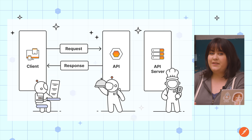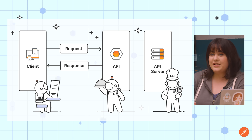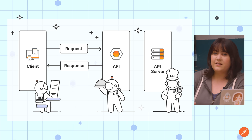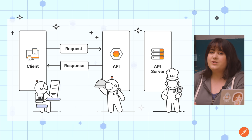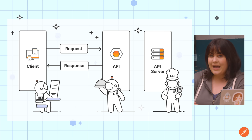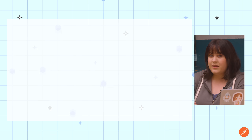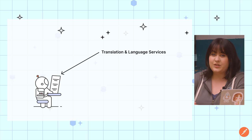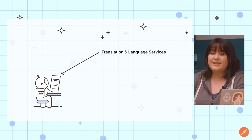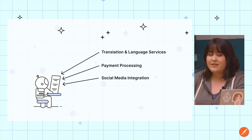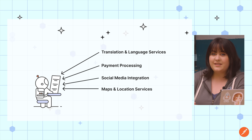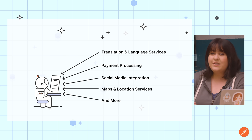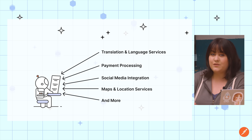Developers use APIs to add features and functionality to their applications without having to rewrite code that can be found elsewhere. For example, if you want users to be able to translate text within your app, it's probably not reasonable to include a multi-language dictionary within your application. But you can easily have the app call the Google Translate API to seamlessly provide the service to your users. The same idea applies to accepting payments, sharing to social media, or using location services. These are all challenges that have been solved already, and you can save time and money by leveraging existing APIs to handle these functions for you in your app.